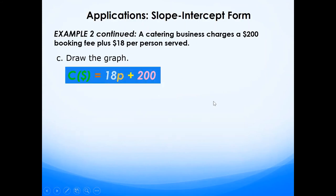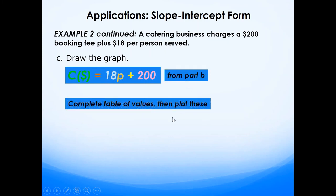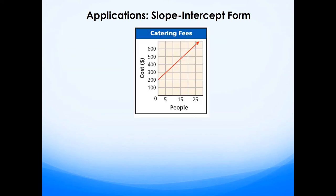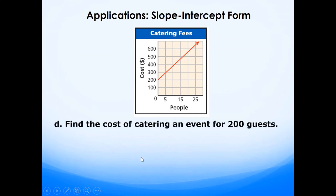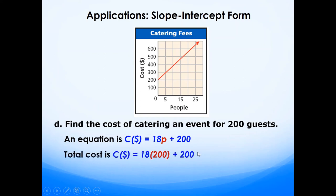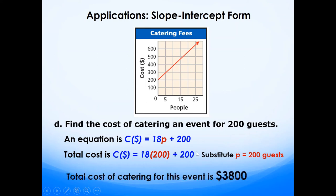Plot the graph using the equation from part b by completing a table of values — you only need two values to draw the line. The x-axis shows number of people served and the y-axis shows catering cost. To find the cost for 200 guests, substitute p = 200: cost = 18 × 200 + 200 = 3600 + 200 = $3,800.